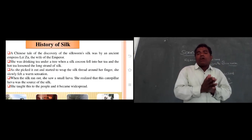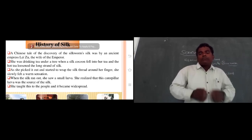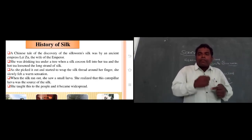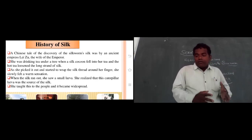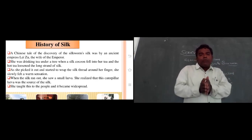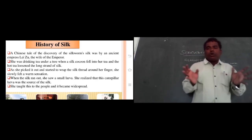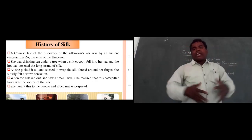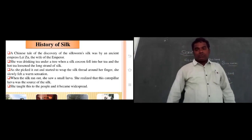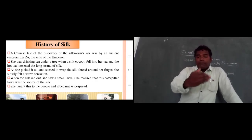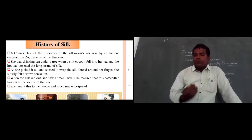When the silk ran out, she saw a small larva in the cup of tea and realized it was a caterpillar. The caterpillar converted into a cocoon, which released a thread. She thought about making this widespread — why not start sericulture using these cocoons and insects? She got this fantastic idea and implemented it in China around 2800 to 3000 BC.